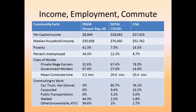Looking at community facts such as per capita income: in Hooper Bay, the per capita income is less than one-third what it is in the USA as a whole or around Cal State Dominguez Hills. The Hooper Bay per capita income is $8,849 per year, whereas around California State University Dominguez Hills it's above $28,000, and close to $28,000 for the USA as a whole. Also, the median household income is significantly lower in Hooper Bay, and the poverty rate in Hooper Bay, Alaska is 41.3%, compared to 7.5% around CSUDH and 14.3% in the USA as a whole.